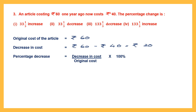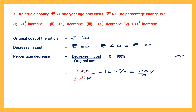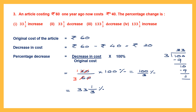To find the percentage decrease: decrease in cost divided by original cost, multiplied by 100%. That is 20 by 60 into 100%. Cancelling: 2 ones are 2, 2 threes are 6, giving 100 by 3 percent. Dividing 100 by 3 gives 33 and one-third. So the answer is 33 one-third percent decrease, and that is option 2.